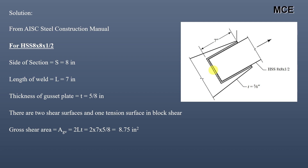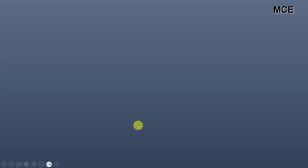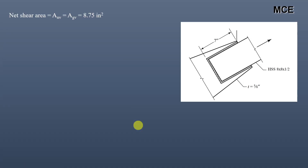Gross shear area equals 2 times the length of the weld times the thickness of the gusset plate, so it equals 2 × 7 × 5/8, which is 8.75 in². Since in welded connections the gross and net shear areas are equal, the net shear area is also equal to 8.75 in².